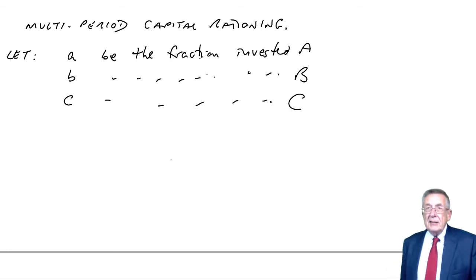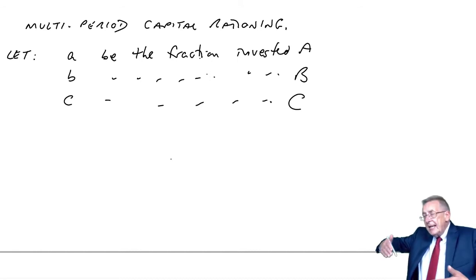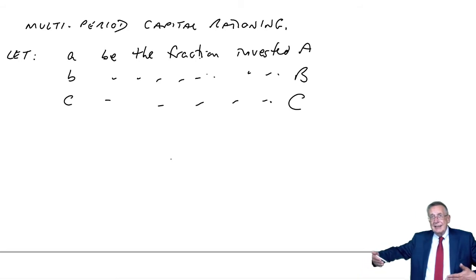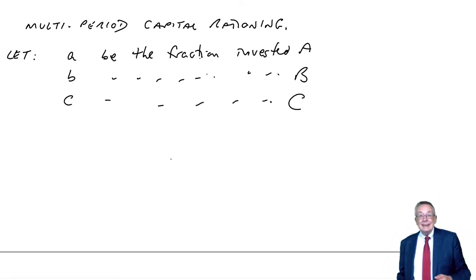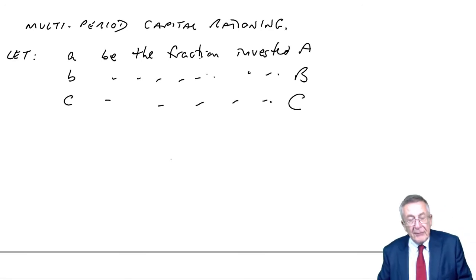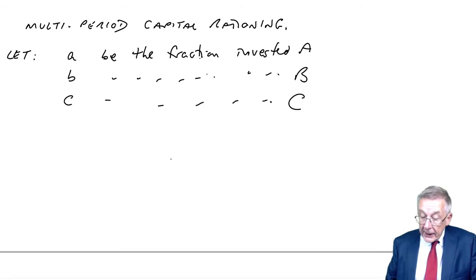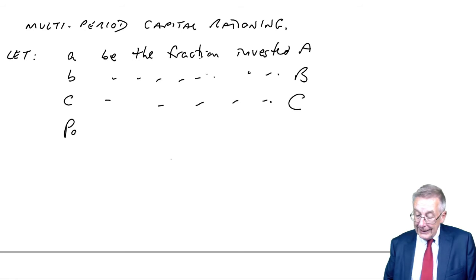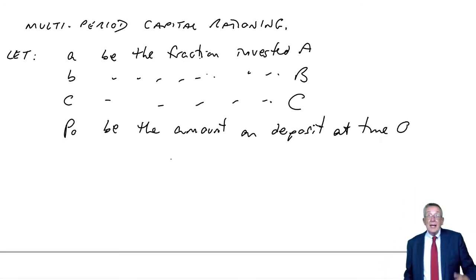One other thing though. Look at the very last line of this. We're required to formulate the model. Any capital not used in year zero may be put on deposit for one year and earn interest at 7%. What does that mean? Why on earth? Remember, we're borrowing money. The NPV is 10%. We're borrowing money at 10%. Why should I be prepared to borrow money at 10% if I'm only going to earn interest on it at 7%?